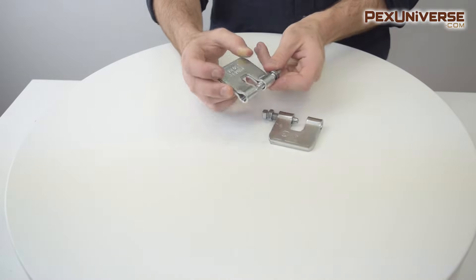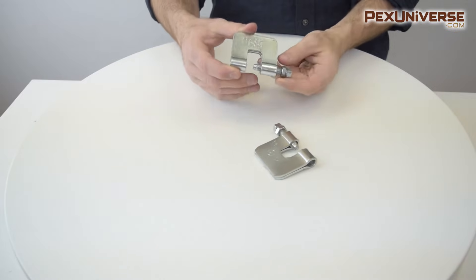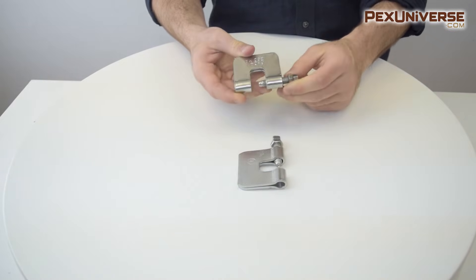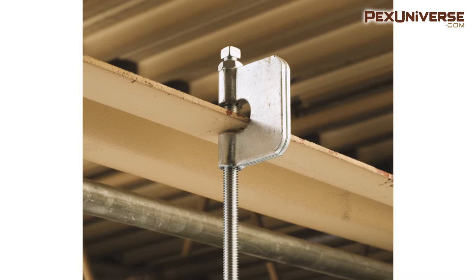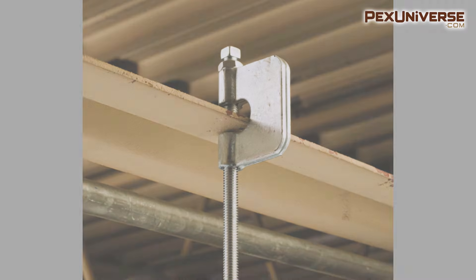Steel C clamps are designed for attaching a hanger rod to the bottom flange of an I beam and the hanger rod should make contact with the beam to ensure full engagement. These are made of low carbon steel and can hold a max load of 400 pounds. They come in plain or galvanized steel.